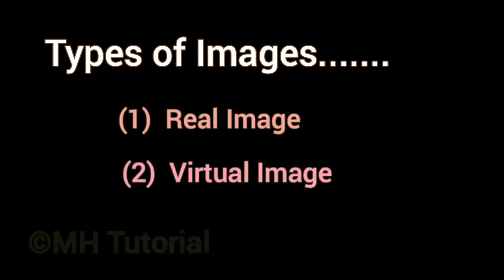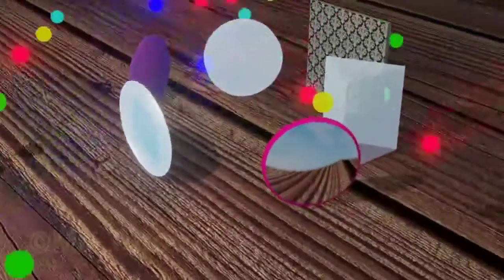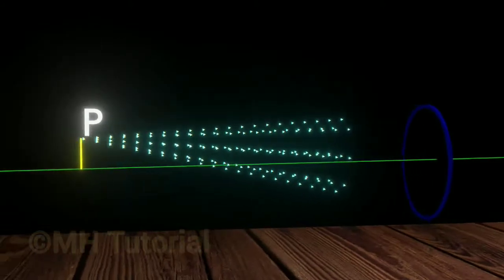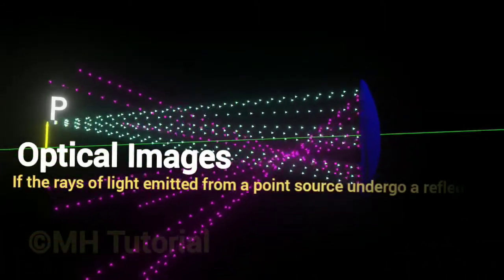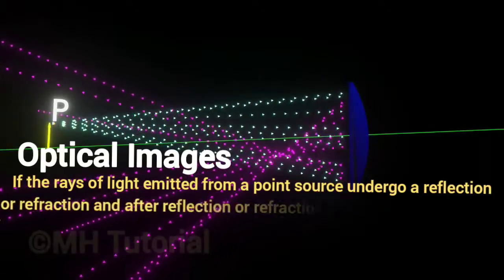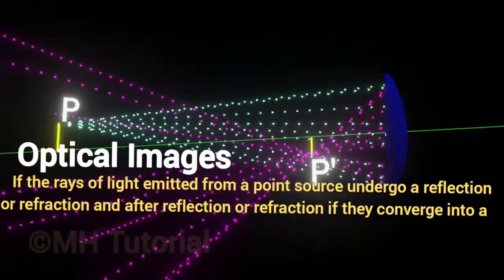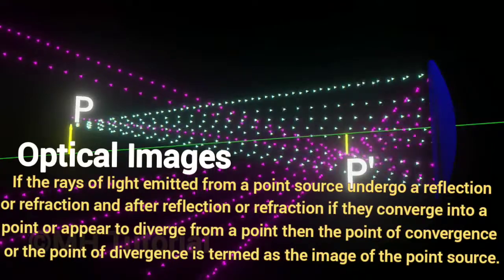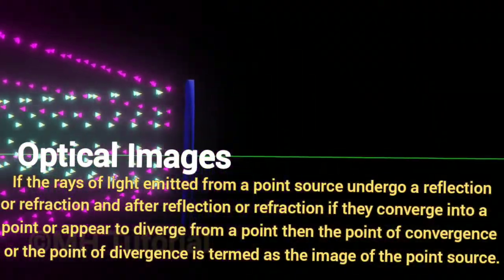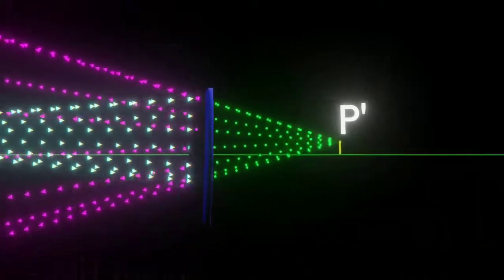So we understand the two types of images: real image and virtual image. Now let's come back to our first question — what is an image? You can define it brilliantly like this: if the rays of light emitted from a point source undergo a reflection or refraction, and after reflection or refraction they converge into a point or appear to diverge from a point, then the point of convergence or the point of divergence is termed as the image of the point source.